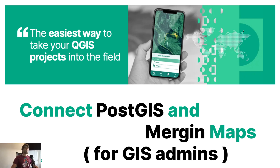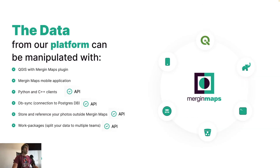Hi, I'm Peter from Lutra Consulting. Today we'll be talking about Merging Maps and a PostGIS connection called DB Sync. Merging Maps can be used for field data collection, use of your data in QGIS, and transfer of data. There are many tools that use the Merging Maps Cloud API, such as Python and C++ clients, DB Sync connection to Postgres, storing and referencing photos in S3 buckets, media sync, and work packages for splitting data to multiple teams — all connected through Merging Maps Cloud.